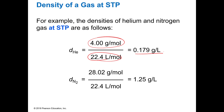Nitrogen, however, which is 28 grams per mole, is still going to occupy the 22.4 liters. So its density is going to be 1.25 grams per liter at STP.